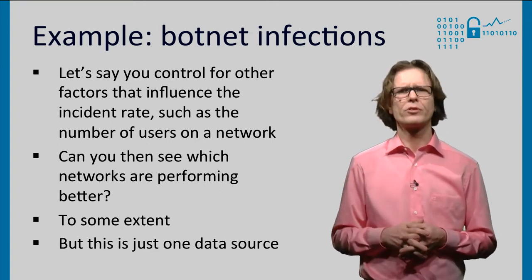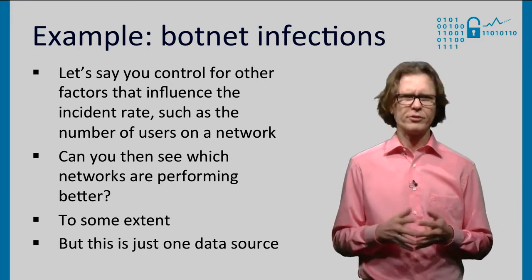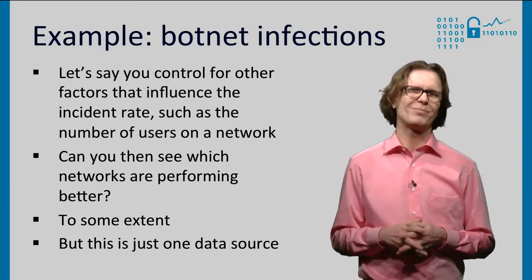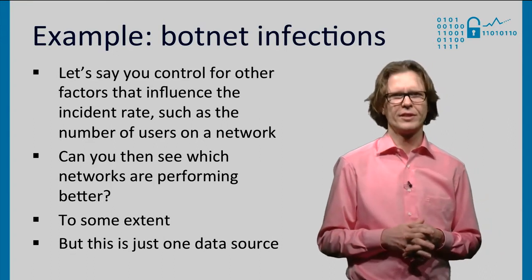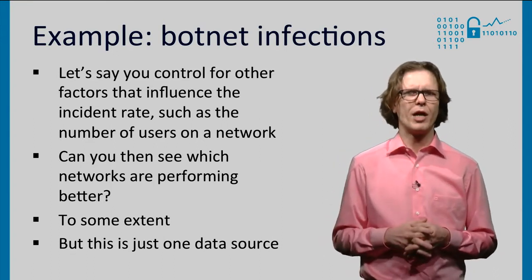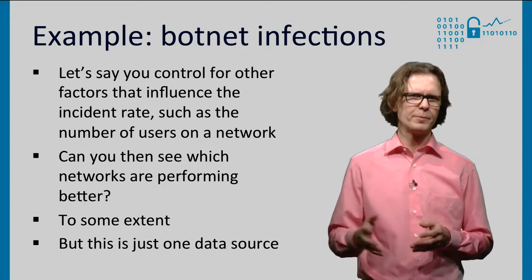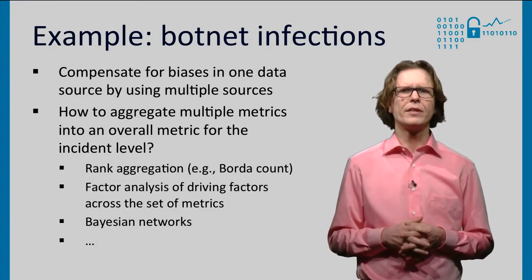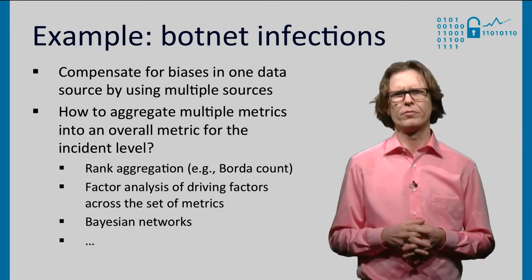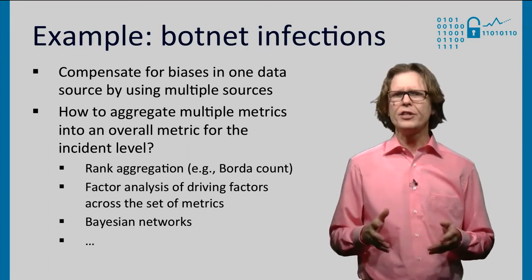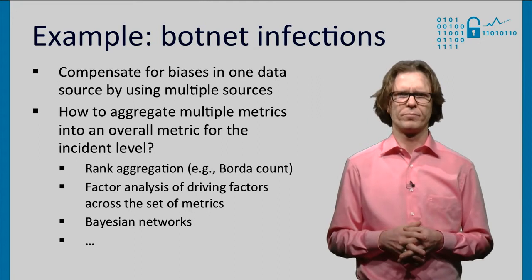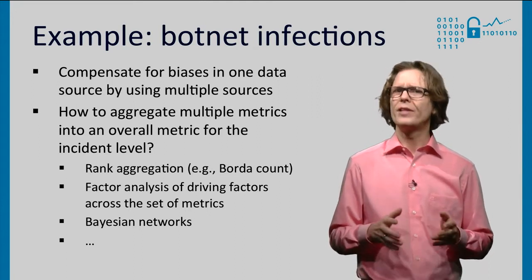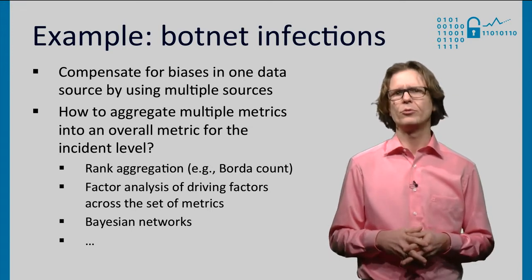Could you then see which networks are performing better? Yes, to some extent — and that's great. But this is just one data source: one limited slice of the problem with its own biases. You could try to overcome this bias by including multiple data sources on infections. Each would result in a different metric, and that's a good step forward, but it also introduces the question of how to then aggregate these metrics into an overall metric.